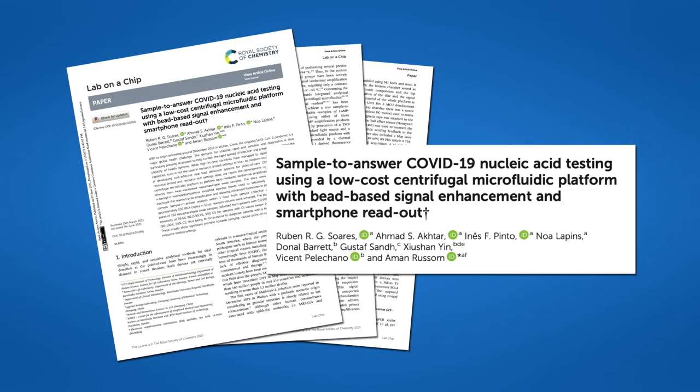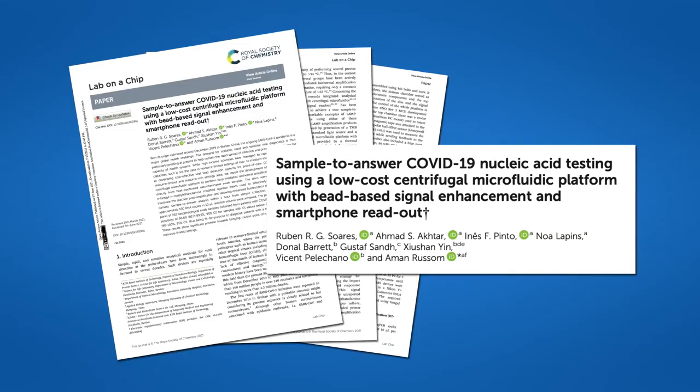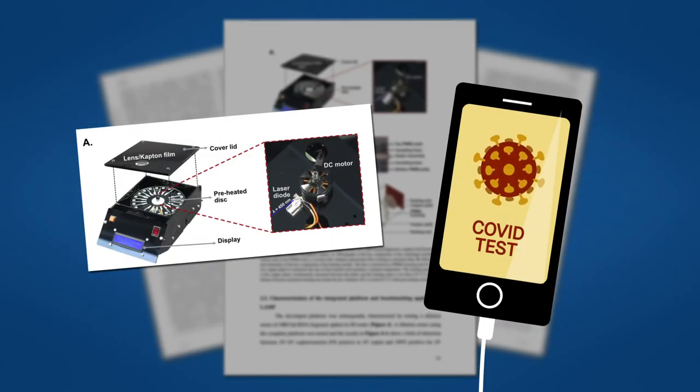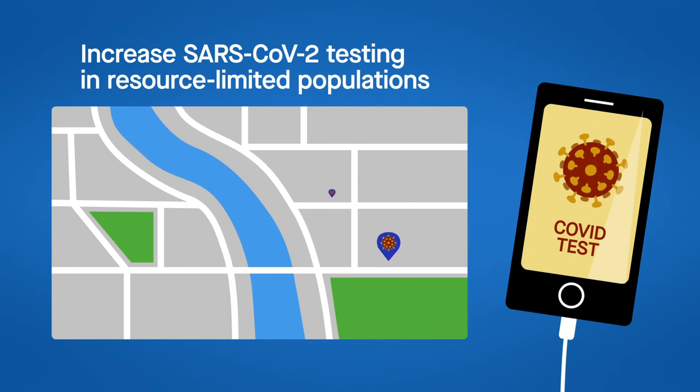In a new publication in the journal Lab on a Chip, the team has developed a new SARS-CoV-2 testing device that is quick, cheap, portable, effective, and even readable by a smartphone, all of which could help increase SARS-CoV-2 testing in resource-limited populations.